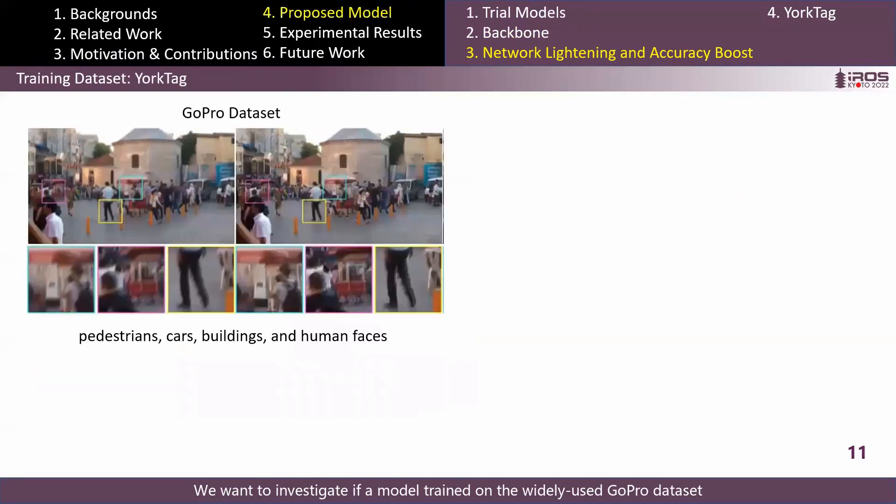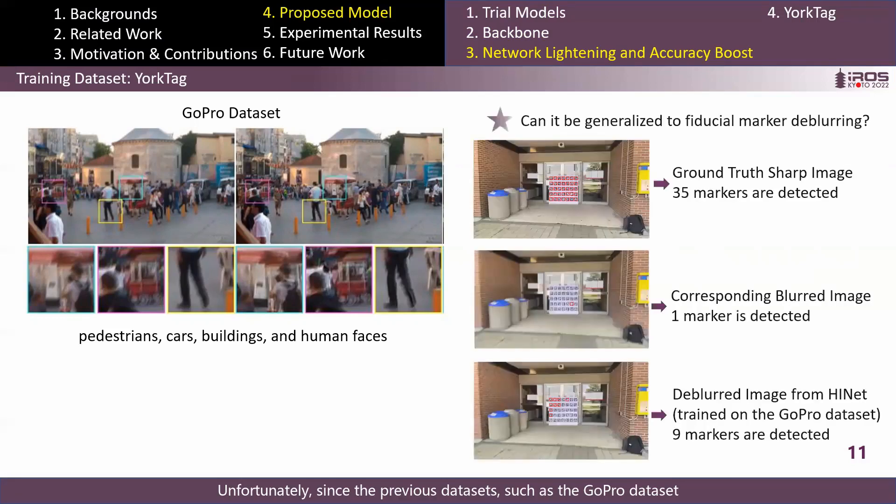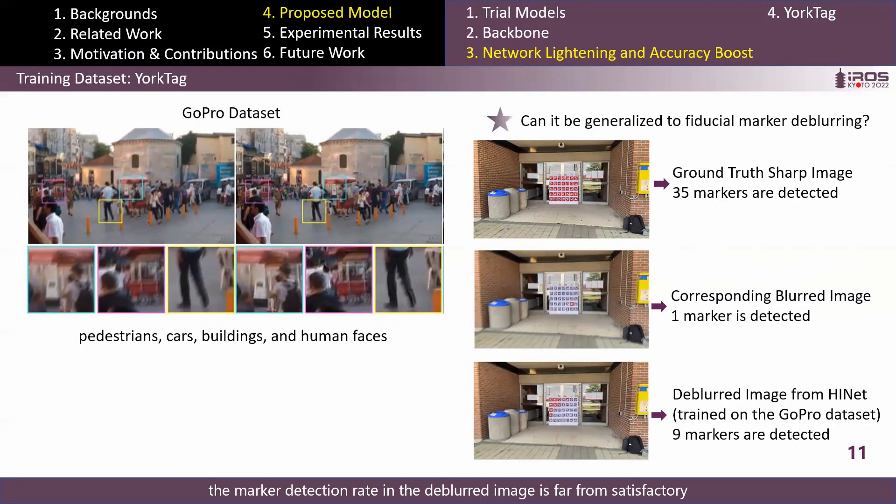Then we want to investigate if a model trained on the widely used GoPro dataset would generalize to our task of fiducial marker deblurring. Unfortunately, since the previous datasets such as the GoPro dataset contain no fiducial markers, the marker detection rate in the deblurred image is far from satisfactory, even for the state-of-the-art deblurring model, HINet.